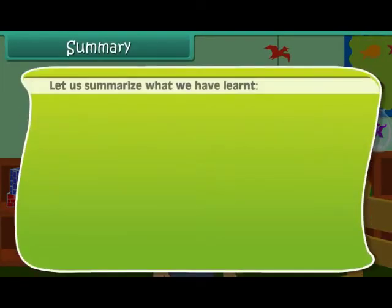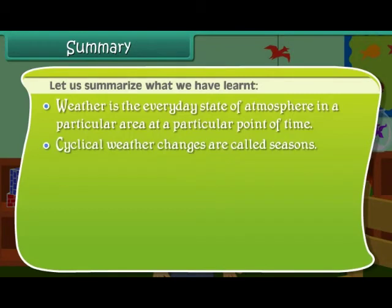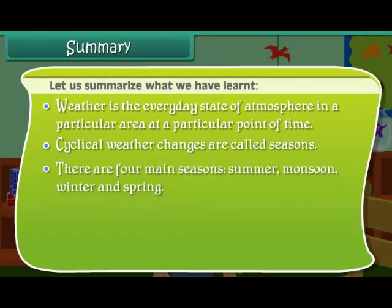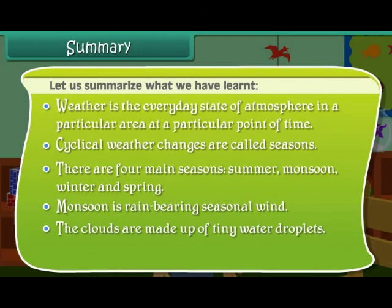Let us summarize what we have learned. Weather is the everyday state of atmosphere in a particular area at a particular point of time. Cyclical weather changes are called seasons. There are four main seasons: summer, monsoon, winter and spring. Monsoon is a rain-bearing seasonal wind. The clouds are made up of tiny water droplets. Wind is moving air.